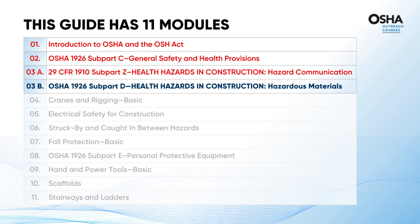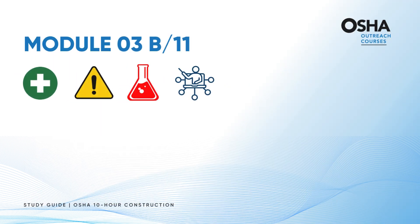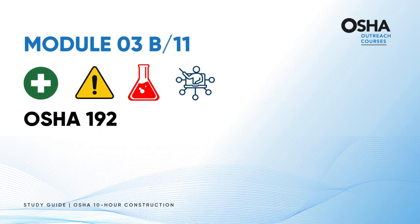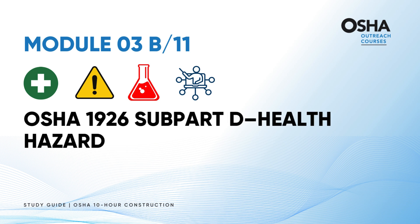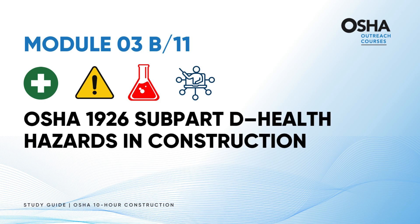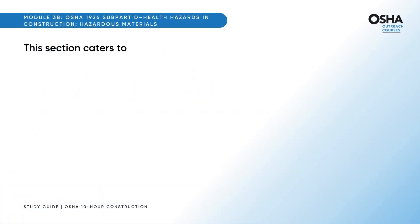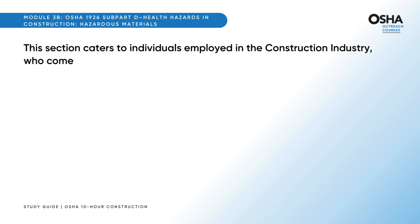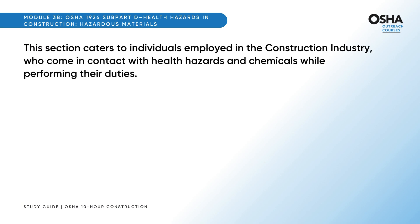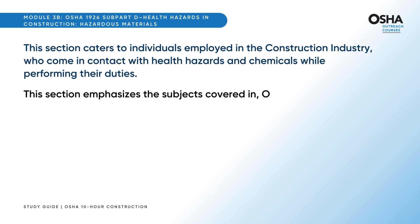In this section, we will discuss Module 3B, which is about OSHA 1926 Subpart D, Health Hazards in Construction. This section caters to individuals employed in the construction industry who come in contact with health hazards and chemicals while performing their duties, and emphasizes the subjects covered in OSHA 29 CFR 1926 Subpart D.